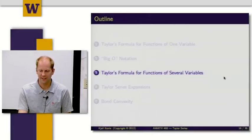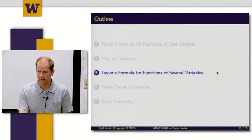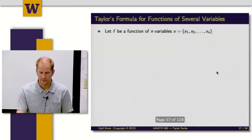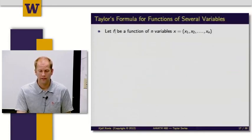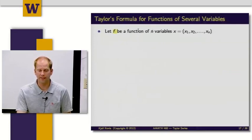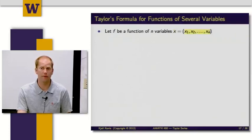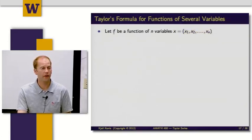Moving on, part three is going to be Taylor's formula for functions of several variables. So last time, f was just a function of a single variable x. And now I'm going to let x be a vector — you can think of x as x1, x2, up to xn. And f is still going to be a real-valued function, so whatever comes out is scalar.